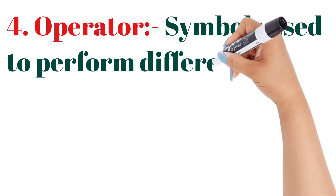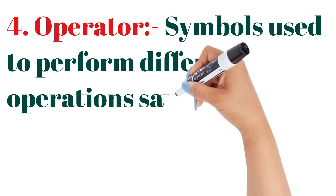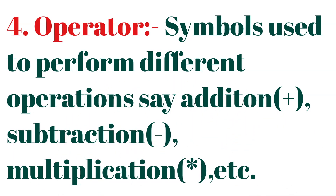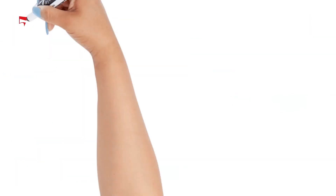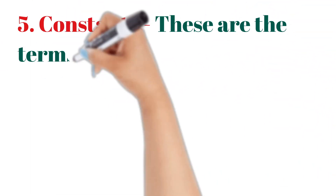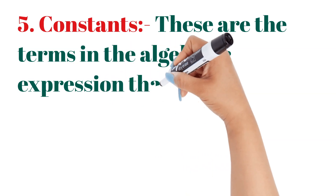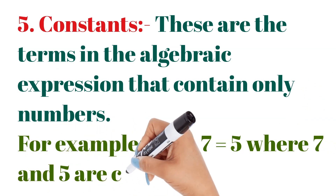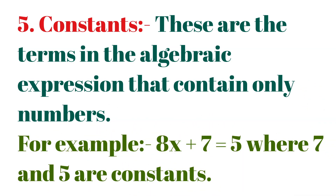Operator: symbols used to perform different operations such as addition, subtraction, multiplication, etc. — we call them all operators. Constants: these are terms in algebraic expressions that contain only numbers. For example, in 8x + 7 = 5, where 7 and 5 are constants — numbers which are not attached to any variable.